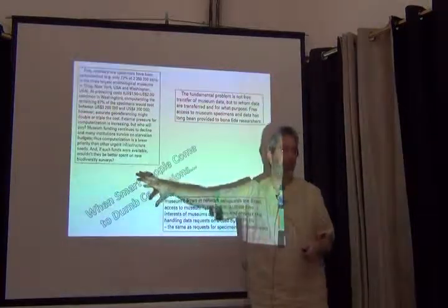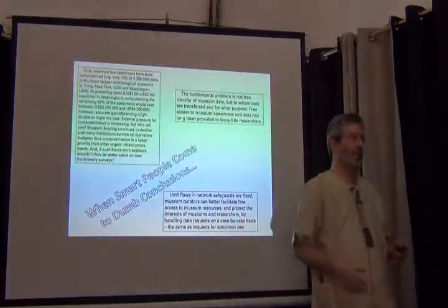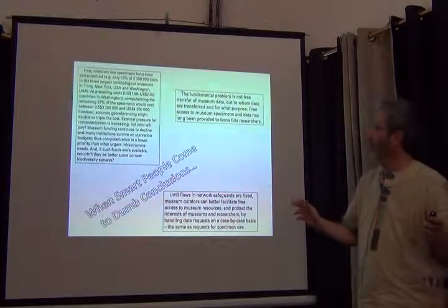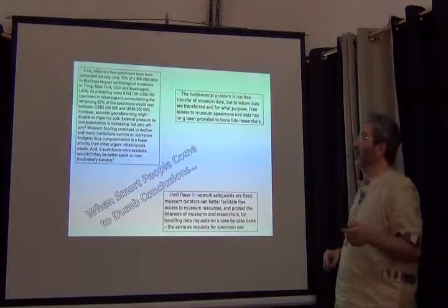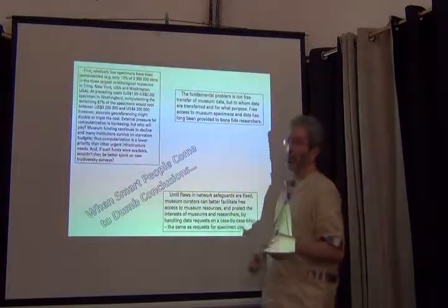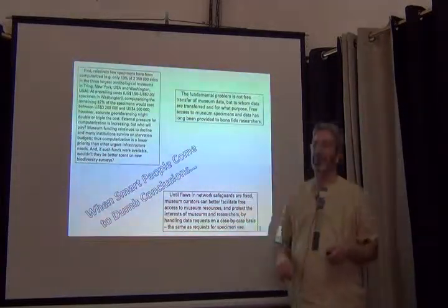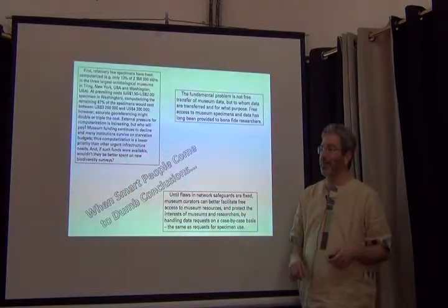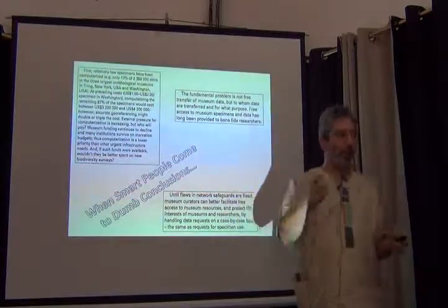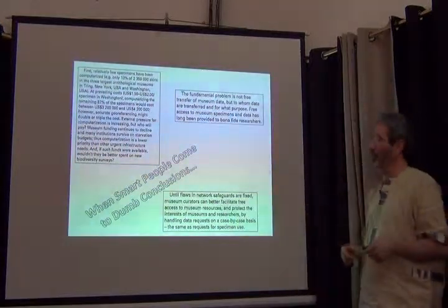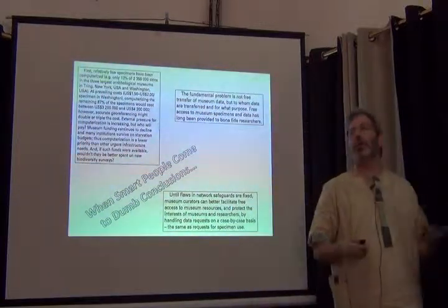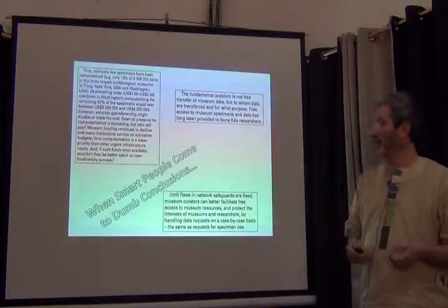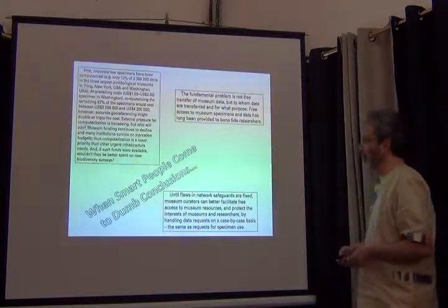All of the cost estimates are out of date — we know we can do it much cheaper now. But having three million bird specimens computerized for three or four million dollars doesn't sound very bad. My point in this talk is maybe that's not even what it takes. This is just to give you an idea of where we came from — that's why I call it 'when smart people come to dumb conclusions.'